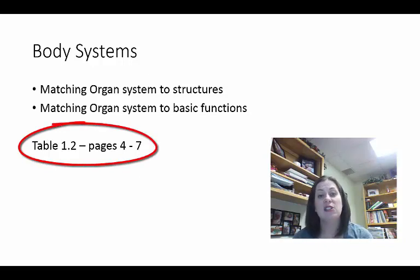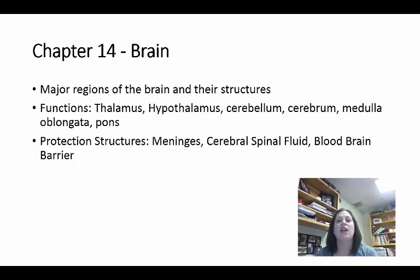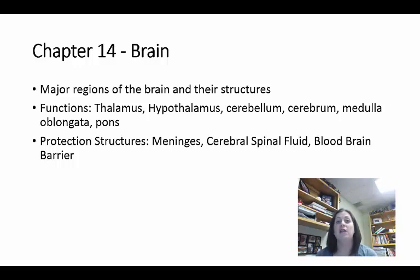Now let's get started with the chapters we covered this semester. There's a correlation between your lab final and your lecture final since we covered similar information. For chapter 14 on the brain, you need to know the major regions: the brainstem, the cerebellum, the diencephalon, and the cerebrum. Some of these have parts — the brainstem contains the midbrain, the medulla, and the pons.